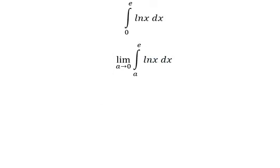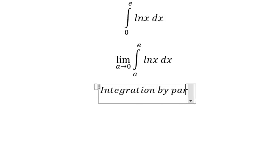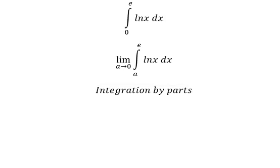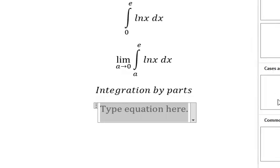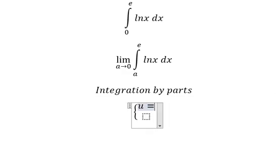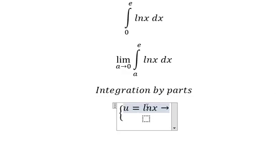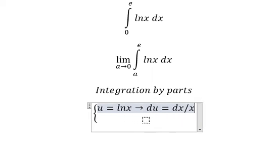Next, we need to use integration by parts. So I will put u equals ln x. After that, we need to do the first derivative for both sides, and we have du equals dx over x.